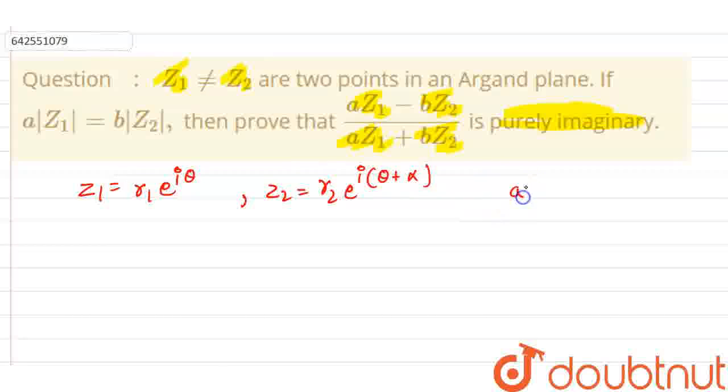So which means that ar1 is equal to br2. This is the given thing, ar1 is equal to br2.